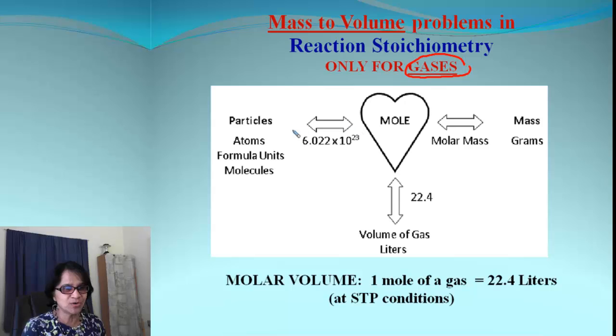This is our main roadmap: particles, moles, and mass, and we know the roadmap always goes through moles. We are adding one more component to that, which is the volume of a gas in liters. So if we have a reactant or product, a gas, we can use this particular number, 22.4. And how is it related? One mole of any gas will always be 22.4 liters of volume if there are STP conditions met with.